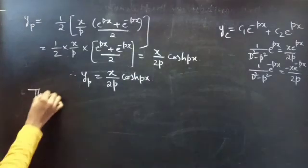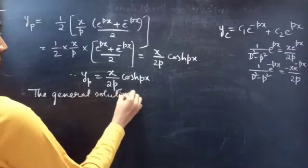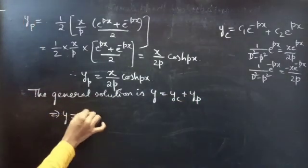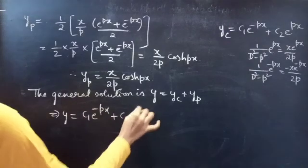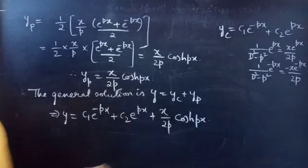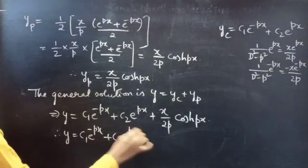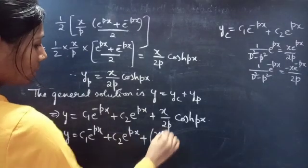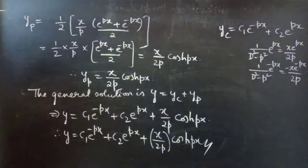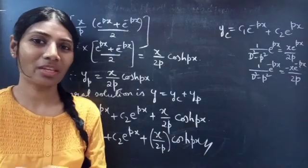The general solution is y = yc + yp, giving y = c1·e^(-px) + c2·e^(px) + (x/2p)·cosh(px). This is the required solution. We have seen a problem from higher order linear differential equations in this video. Hope you understood — see you in the next video, bye-bye.